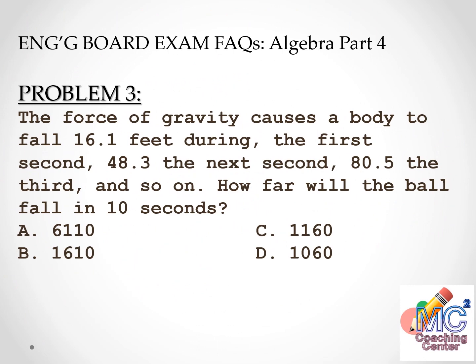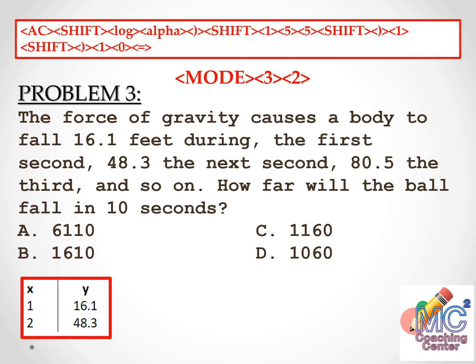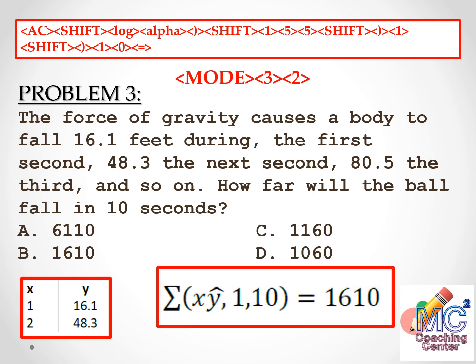Problem 3: The force of gravity causes a body to fall 16.1 feet during the first second, 48.3 feet the next second, 80.5 feet the third, and so on. How far will the ball fall in 10 seconds? This is again an arithmetic progression. Press Mode 3, 2, and input first term 16.1 and second term 48.3 into the table. Then use AC, Shift, log, Alpha, Shift 155 for the summation from 1 to 10. The total distance is 1,610 feet.